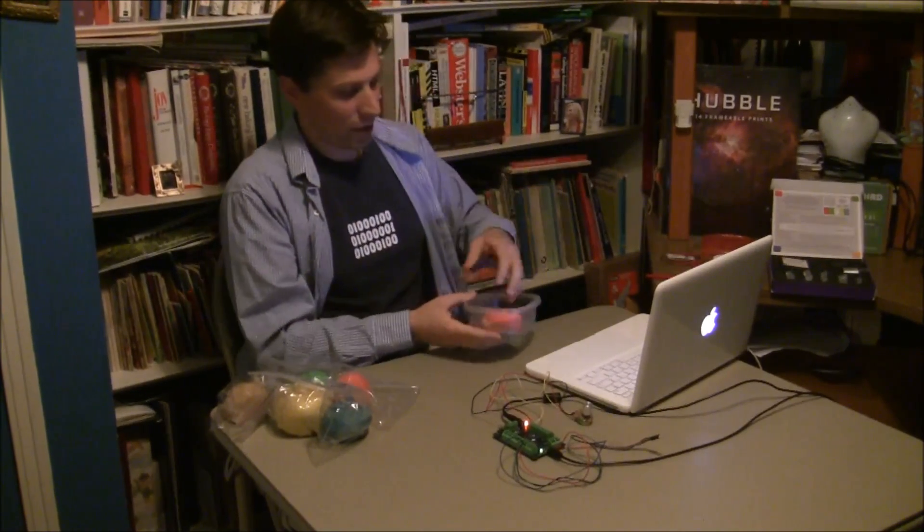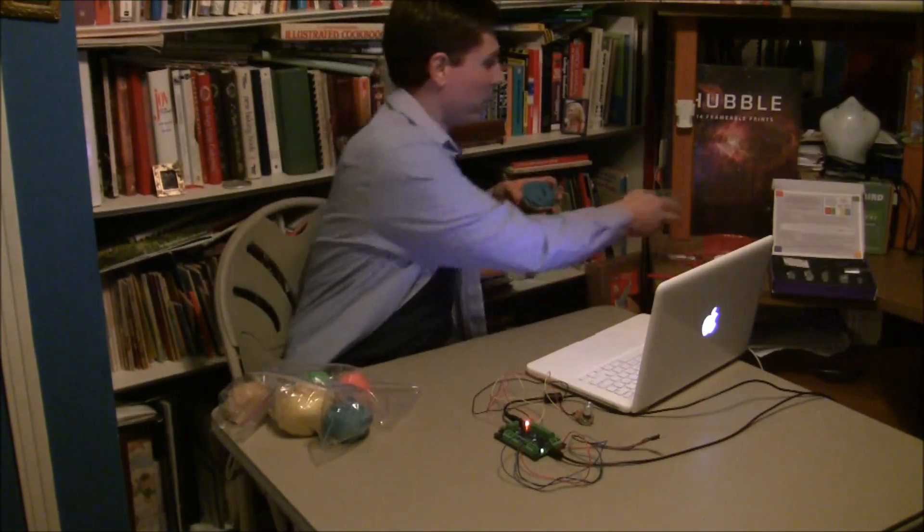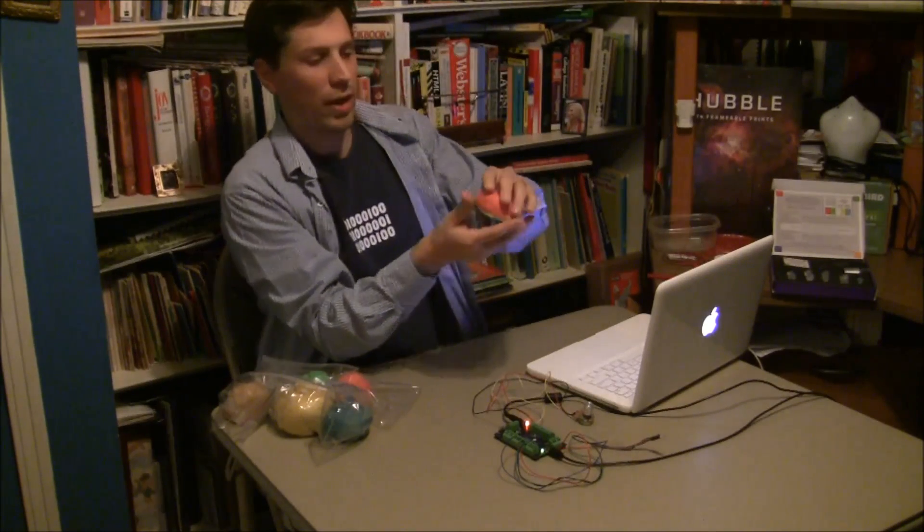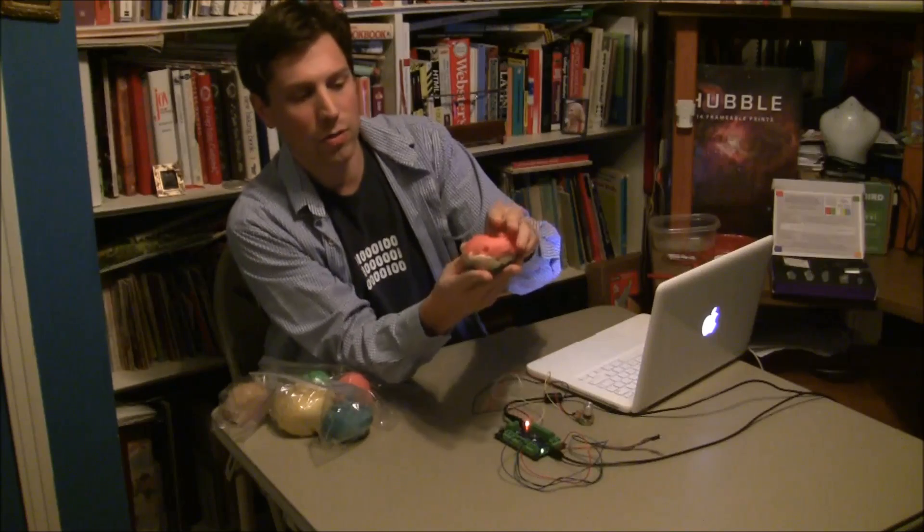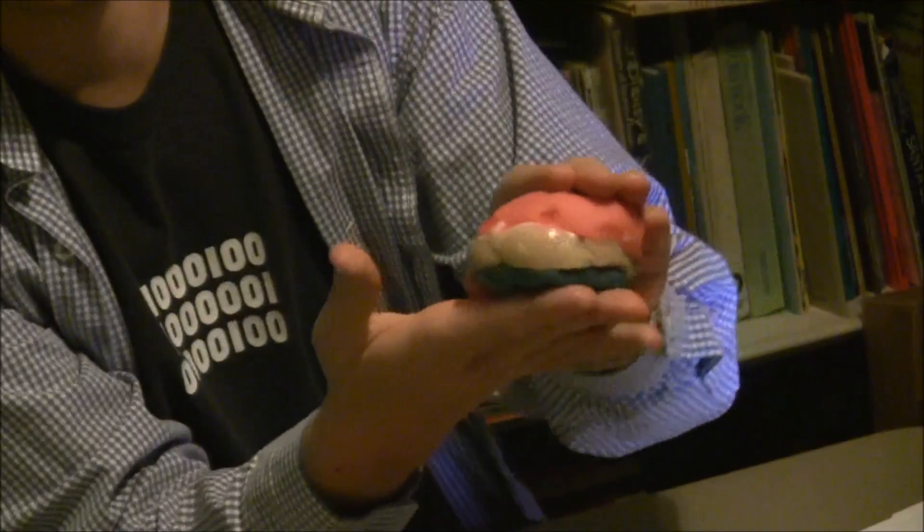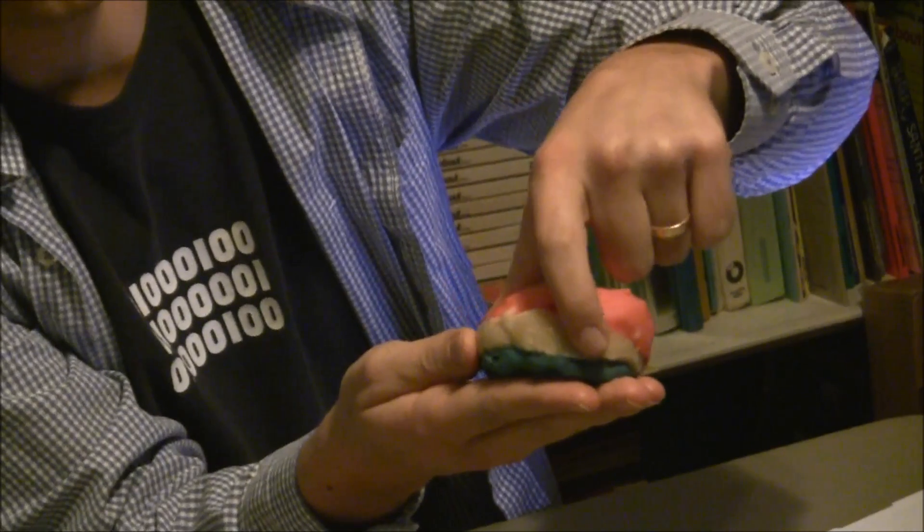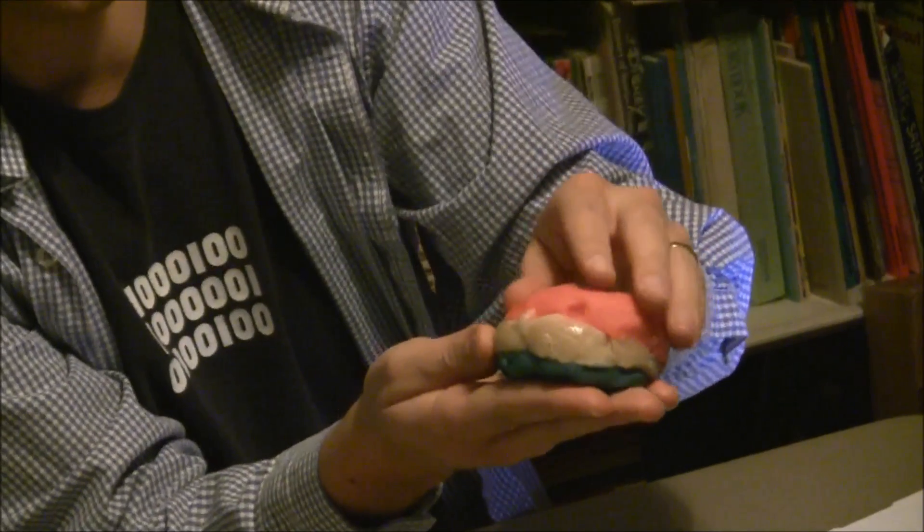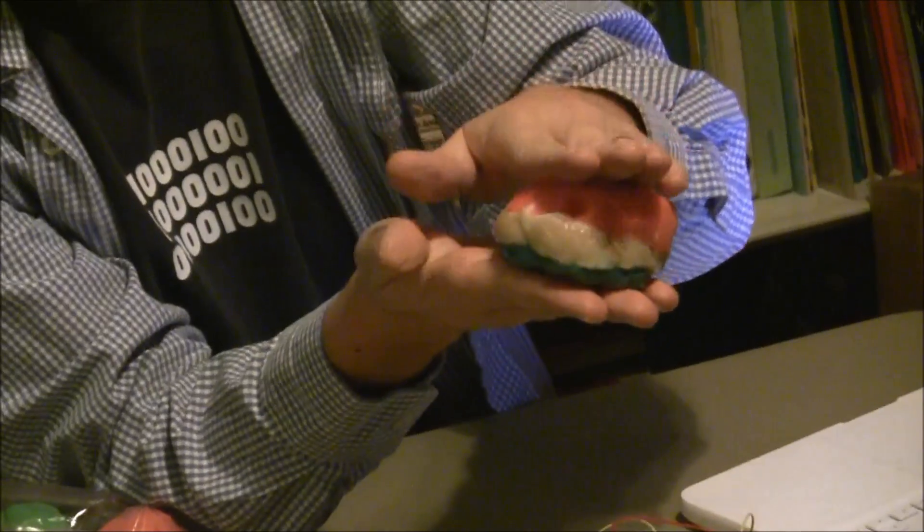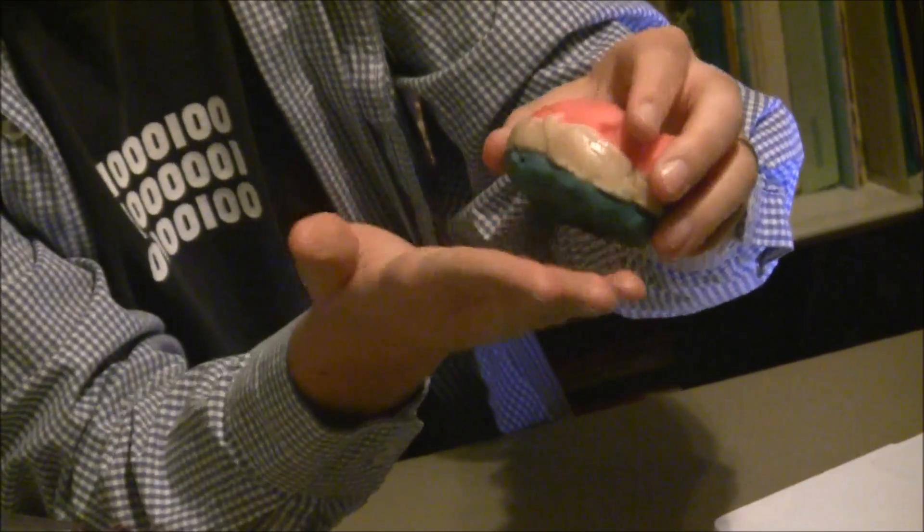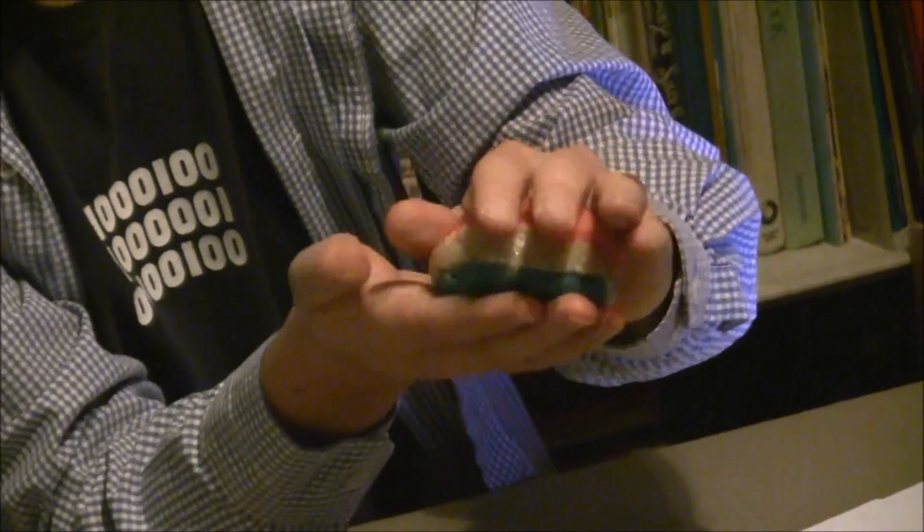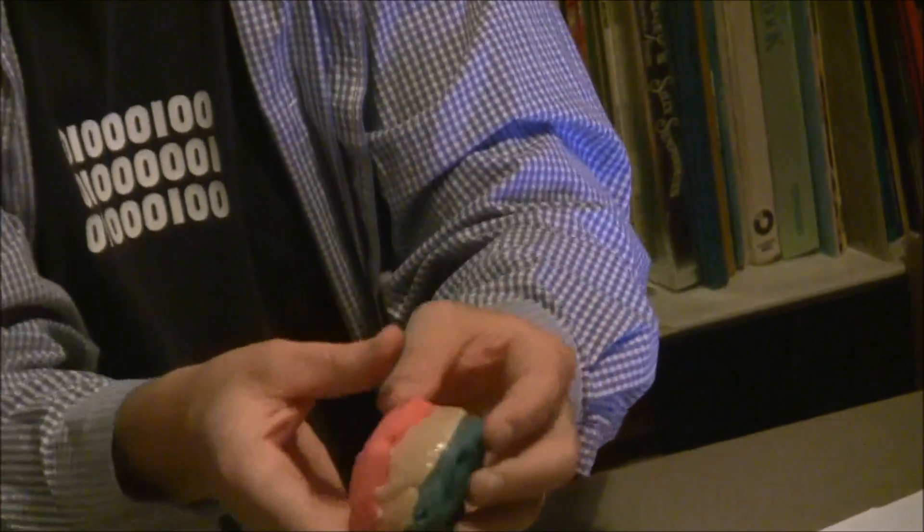Right here, we've made a Squishy Circuits Sandwich. We have three colors of Play-Doh. The red and the blue are both conductive dough. The white dough in the middle is insulating, so electricity cannot pass from the red dough through to the blue dough. That's necessary in order for us to make a complete circuit with some circuit elements.